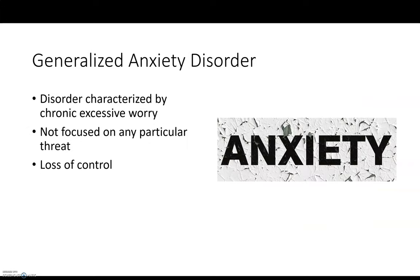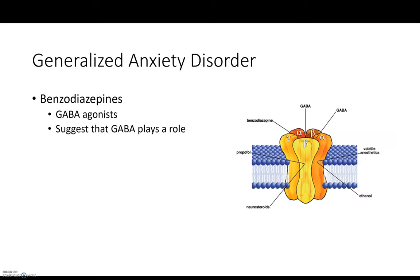Generalized anxiety disorder is characterized by chronic excessive worry. A key feature is that it's not focused on any particular threat — just a general feeling of anxiety and loss of control. Benzodiazepines are a class of drug shown to be effective in treating generalized anxiety disorder. Even though underlying causes are still being researched, this suggests the neurotransmitter GABA plays a role. Benzodiazepines are GABA agonists, meaning they mimic that neurotransmitter — they function as a counterfeit key that can open the lock.